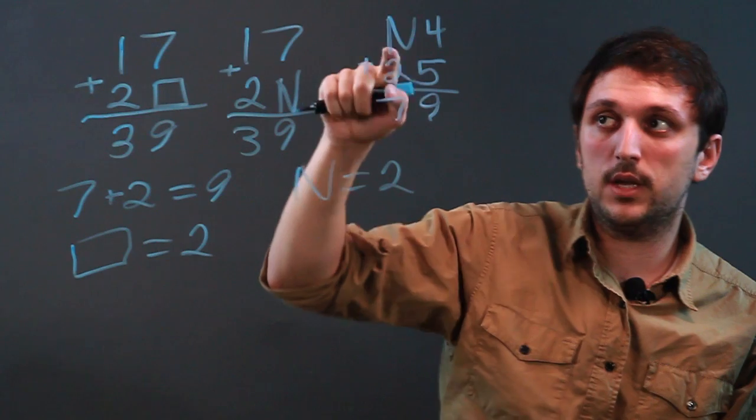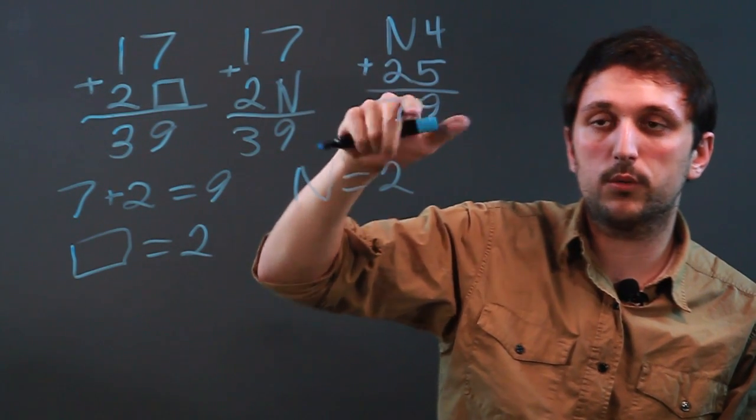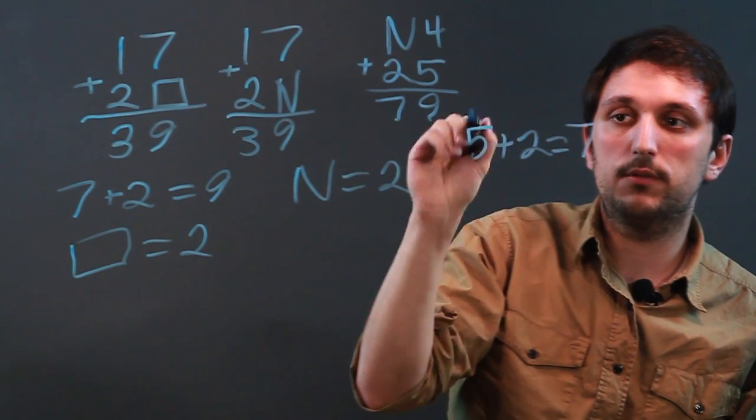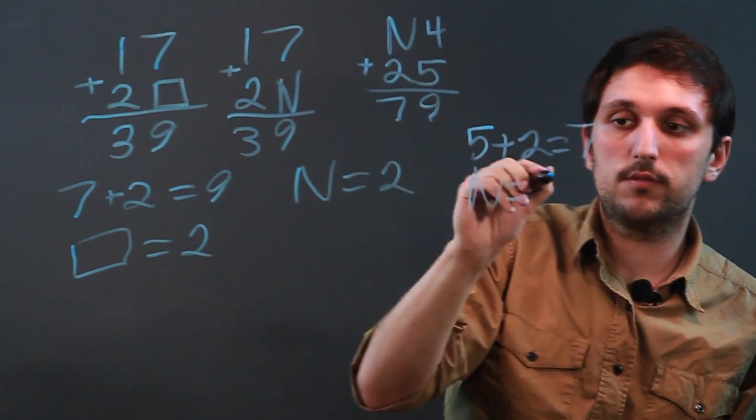Now, if you have it in the ones, so again, what plus 2 equals 7? Well, 5 plus 2 equals 7. So that means n equals 5.